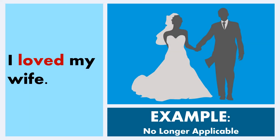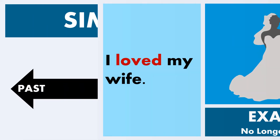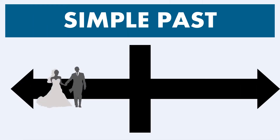For example, if I say 'I loved my wife,' the reader may be confused as to whether or not I still love my wife. If I said 'I loved my wife' and my wife heard me say that, she would have some questions about whether or not that is still applicable. As a result, you need to be cautious when using the simple past tense so that you don't create confusion in these kinds of contexts.